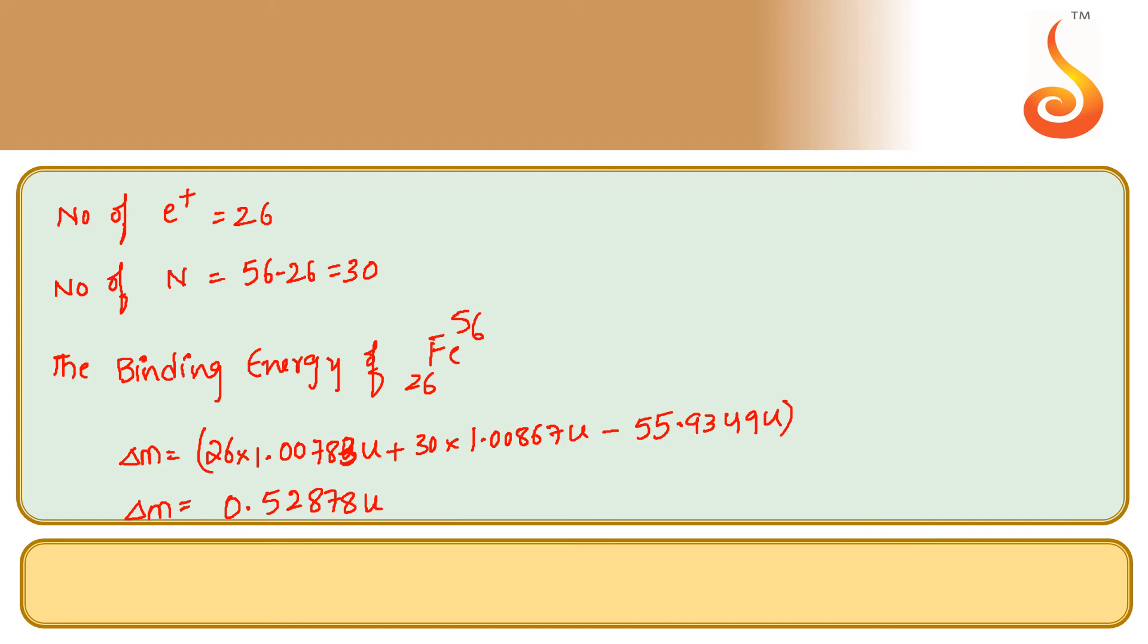Since we need to know the binding energy, the binding energy of the iron is equal to 0.52878 atomic mass units. One atomic mass unit equals 931.5 mega electron volts. So we will get the binding energy in terms of mega electron volts. We get 492 mega electron volts.